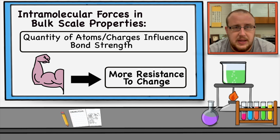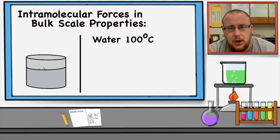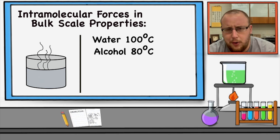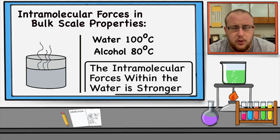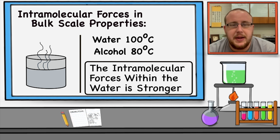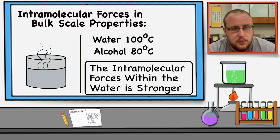This increase in energy also increases the threshold of bulk scale properties. For example, a cup of water boils at 100 degrees Celsius, while the same measurement of rubbing alcohol boils at only 80 degrees Celsius. Why does one boil at 100 and one at 80? Because the intramolecular forces in the water are stronger and there are more of them. Because they are stronger, they're going to be harder to break and it's going to take more energy — and thus a higher temperature — to break them. The water has more intramolecular forces than the isopropyl alcohol.